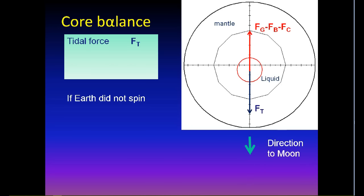The tidal force, Ft, that pulls the core towards Moon. The gravity force, Fg, that pulls the core back towards the planetary center of mass. The buoyancy force, Fb, that pushes the core from a high pressure zone in the liquid to a lower pressure zone, trying to increase the core eccentricity. The centrifugal force, Fc, that also tries to increase the core eccentricity.